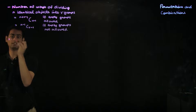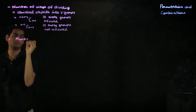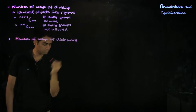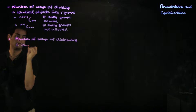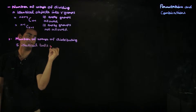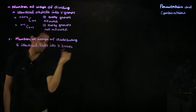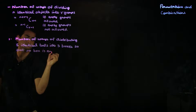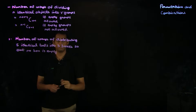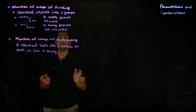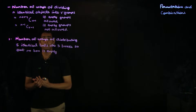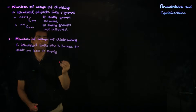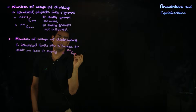The first example asks you to find the number of ways of distributing five identical balls into three boxes so that no box is empty. This is nothing but the number of ways of dividing five identical objects into three groups so that no group is empty. You can directly use the result derived earlier: this is five minus 1, choose 3 minus 1, which turns out to be 6.